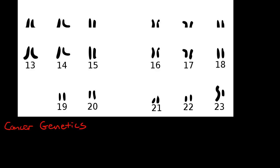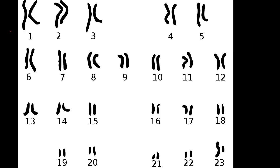Hi, this is Andrew Wolf. In this video I'm going to be talking about cancer genetics. So here we have a picture of the karyotype of the human genome, which shows the 23 pairs of genes that make up the human genome. You can see they're numbered here from 1 to 23, and they are in pairs, so each of these here is one chromosome.